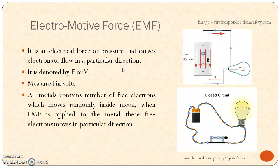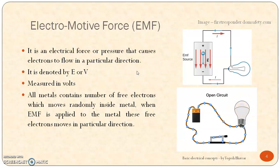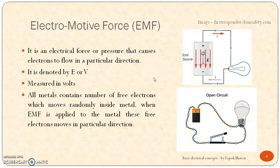All metals contain a number of free electrons which move randomly inside the metal, and when the EMF is applied to this metal these free electrons move in a particular direction. You know the structure of an atom — there is a nucleus and free electrons in the outermost orbits.